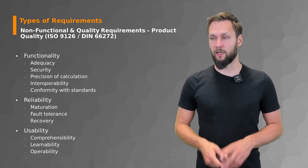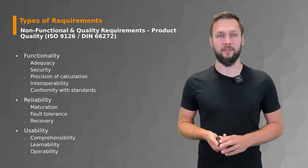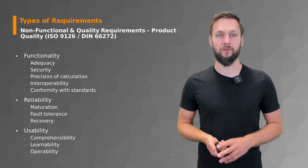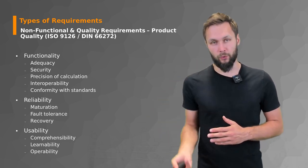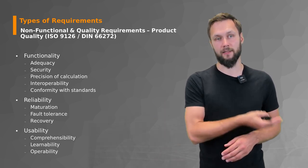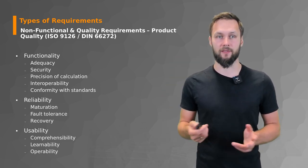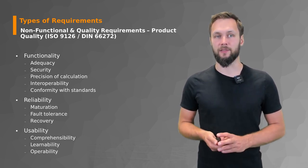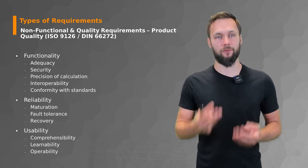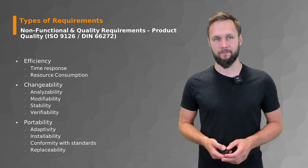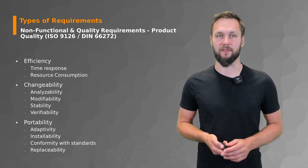There is a very large catalog of quality requirements describing product quality, and there are standards like ISO and DIN for those, where you find descriptions of these quality requirements. You can consult these to check if any should apply to your current project. Various categories with subcategories include functionality, reliability, usability, efficiency, changeability, portability, and many more. The goal is that you know where to find this information when you need it in practice.